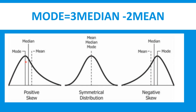دوسری shape positively skew distribution ہے۔ اس میں mode پہلے آتا ہے اور right tail، left tail سے longer ہوتی ہے۔ تیسری negatively skew distribution ہے — اس میں left tail کافی لمبی ہوتی ہے اور mode سب سے آخر میں آتا ہے۔ Symmetrical میں mean، median، mode برابر ہو جاتے ہیں؛ positive skew میں mode سب سے چھوٹا، پھر median، پھر mean آتا ہے۔